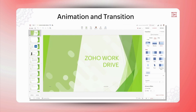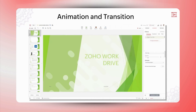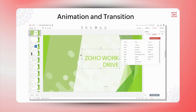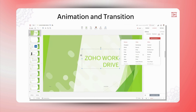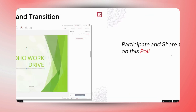Transitions are effects that occur between slides, determining how one slide moves to the next. You can apply a transition by selecting a slide, going to the Transition tab, and choosing an effect. You can customize the transition's duration and apply it to all slides or just specific ones. That sounds amazing. By incorporating animations and transitions, I can make my presentations more dynamic and engaging.